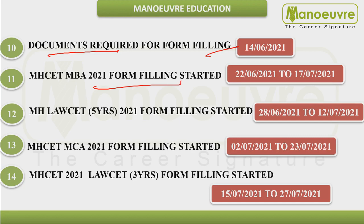After document requirements update, MBA CET form filling also started by 26th June. Likewise, MH Law CET, MCA, and Law 3-year form filling went on till June. MCA and Law 3-year form filling also extended into July. As form filling was completed, we expected the exam date to come in August — but August is nearly ending and still no exam date has been announced.